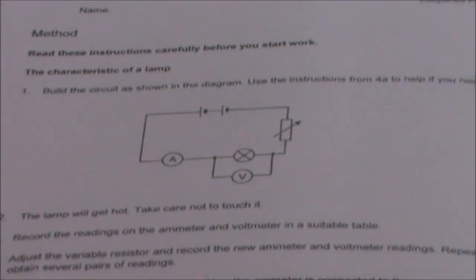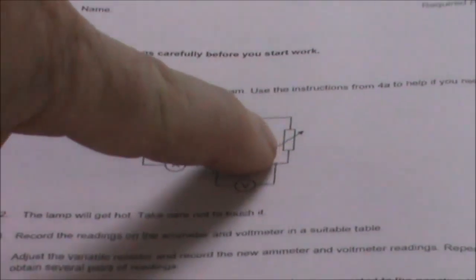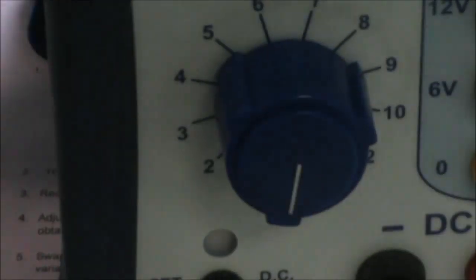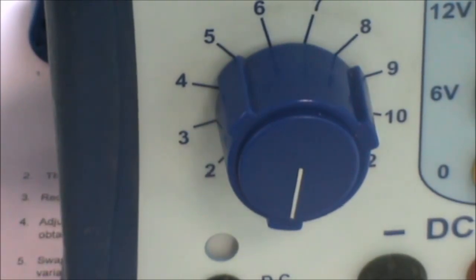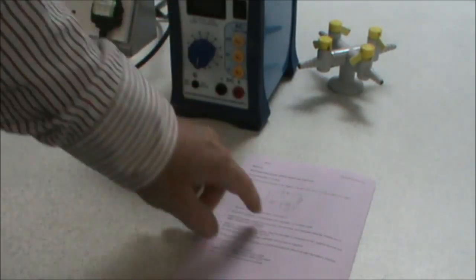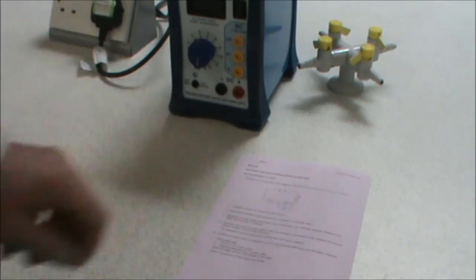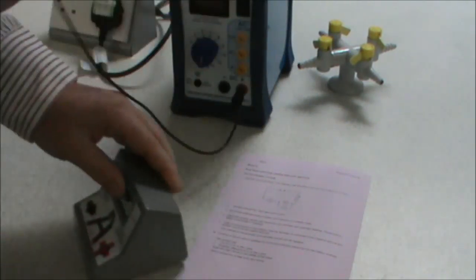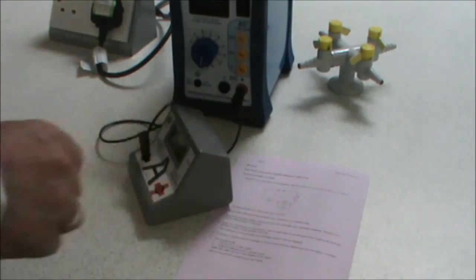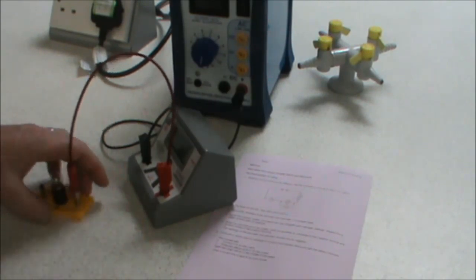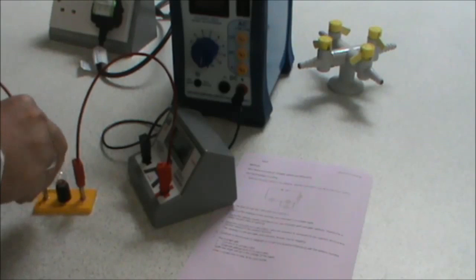The first thing to do is to set up the circuit as shown in the required practical instructions. You'll notice that my circuit has a battery and a rheostat. Remember, I am replacing all of those with my power supply because it has the rheostat built in here. Following my circuit round, I've got my power supply in replace of the cells and the rheostat. We connect from the power supply to the ammeter, from the ammeter to the lamp, and from the lamp back to the power supply.